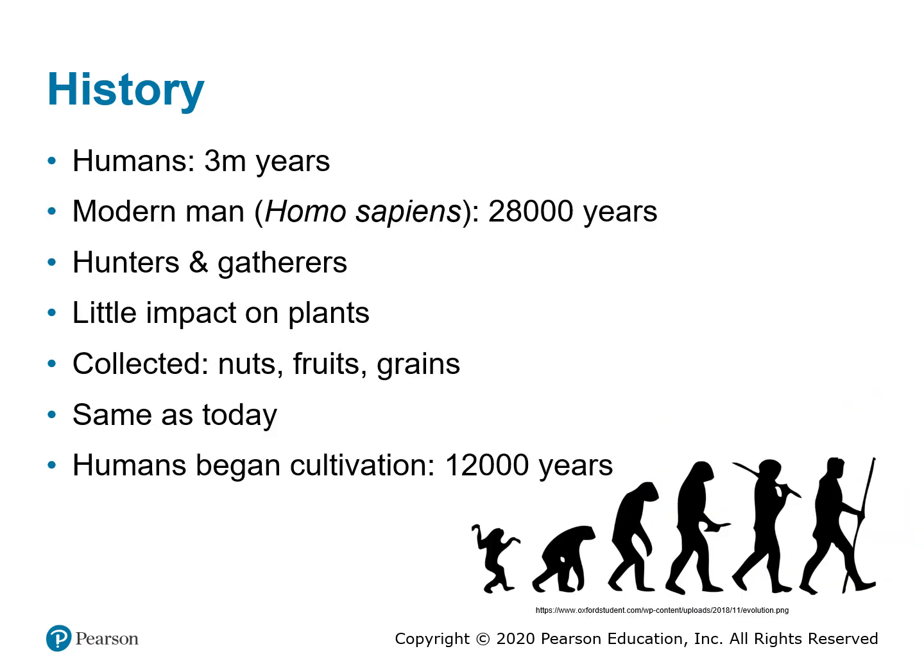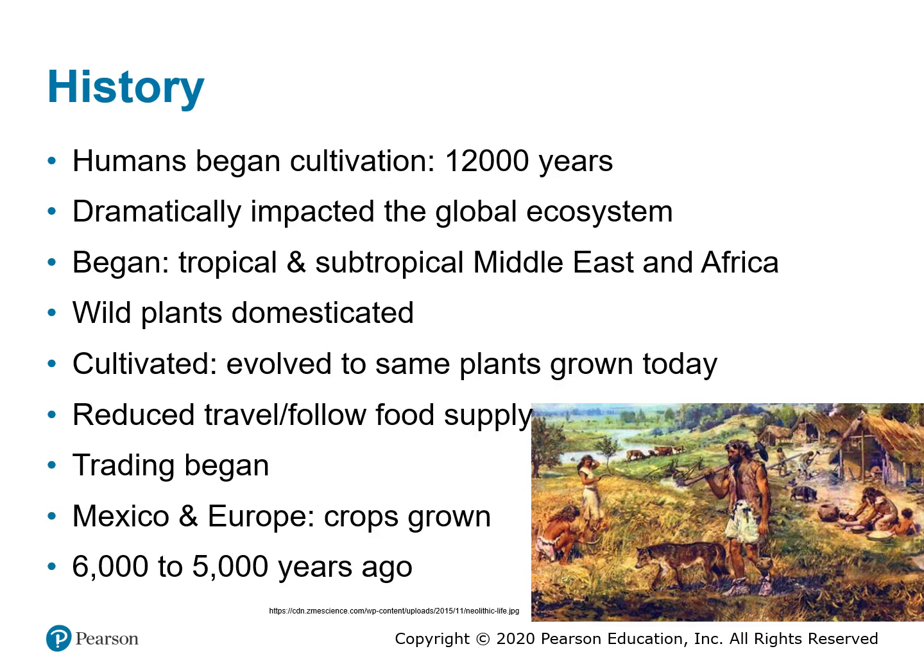Humans as a race appeared about 3 million years ago. Modern man, Homo sapiens, appeared about 28,000 years ago and were basically hunters and gatherers, having little impact on plants and ecosystems, although they did collect nuts, fruits, and grains. Humans began cultivation about 10,000 to 12,000 years ago, and it's most likely that cultivation began in tropical and subtropical regions of the Middle East and Africa. Plants from around the world were then domesticated and cultivated to become the plants we grow and use today.